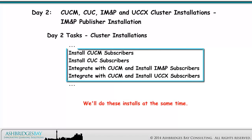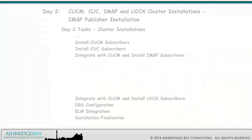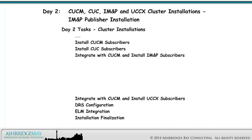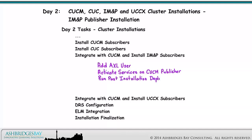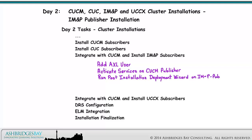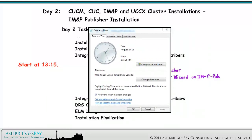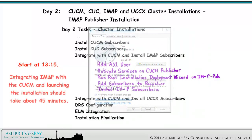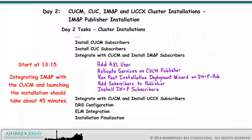We'll do these installs at the same time. The IM&P Pub installation should have completed. We can proceed to add the AXL user, activate services on the CUCM publisher, run the post installation deployment wizard on IM&P Pub, add subscribers to the publisher, and install IM&P subscribers. Integrating IM&P with CUCM and launching the installations should take less than an hour.